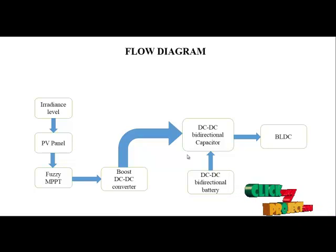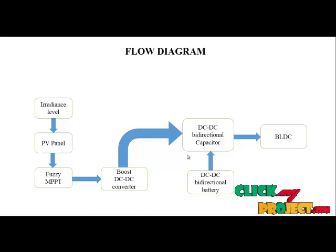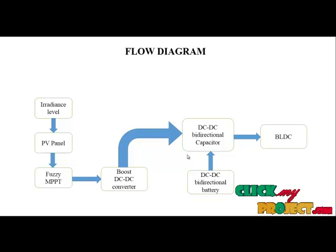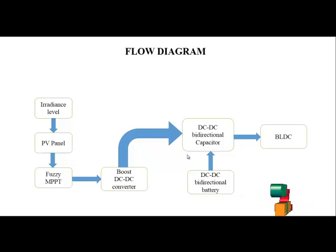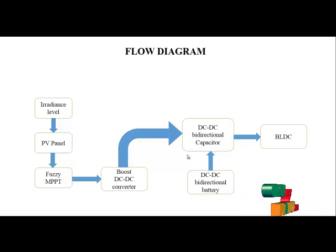After that, a DC-to-DC boost converter is used. Since the PV panel voltage is reduced, we boost it for electric vehicle fast charging. After the boost converter, two storage methods are used: one is capacitor storage and the other is battery storage. These two storage types are connected bidirectionally via DC-to-DC formation.